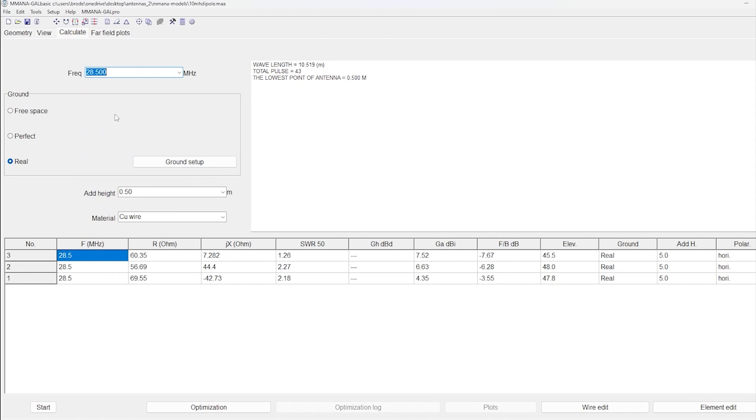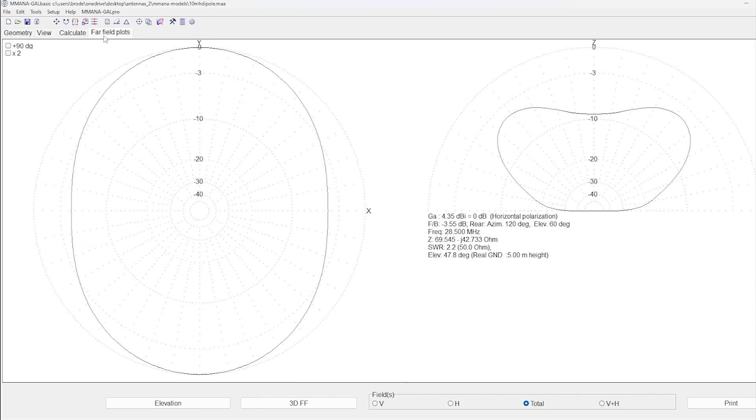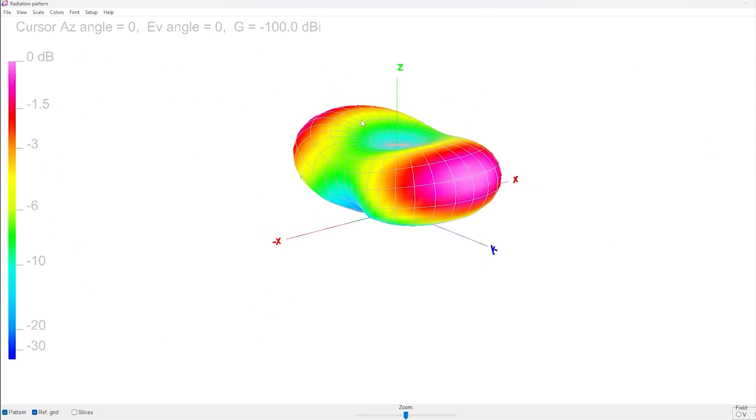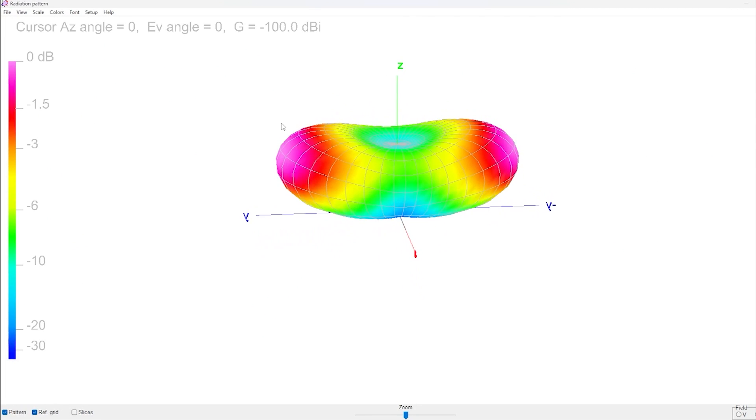So let's just look at the 3D far field plot. I'm going to say 28.5 because that's about where I designed this antenna for. This is a 10 meter wavelength. We want to be half wavelength above ground so we set it to 5 meters. Let's hit start and you can see our resistive component and our reactive component of that antenna.